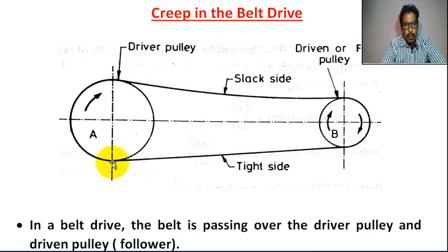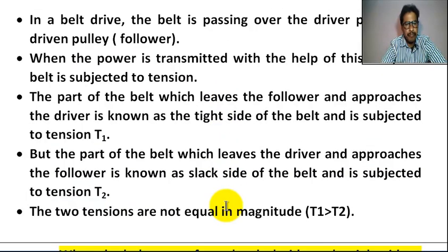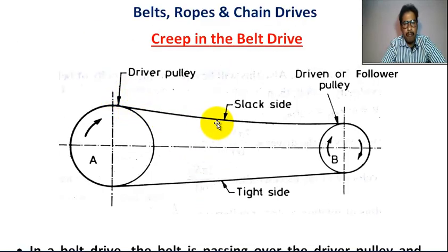But the part of the belt which leaves the driver and approaches the follower is known as the slack side of the belt and is subjected to tension T2.